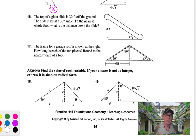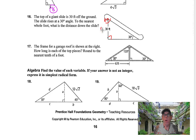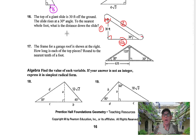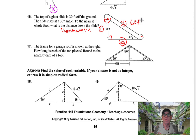For number 18, we have a 30-60-90 triangle set up. The short side opposite the 30 corresponds to 1, the other leg is root 3, and the hypotenuse is 2. The top of a giant slide is 30 feet off the ground, and the slide makes a 30-degree angle. To the nearest whole foot, what's the distance down the slide — in other words, the hypotenuse? That's going to be double the short side. If the short side is 30, then double it — 60 feet — is the length of the hypotenuse.